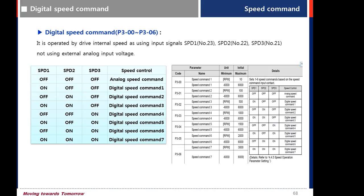To use digital speed command, refer to related parameters P300 to P306. After you set the speed in the parameters, you can operate the speed by the combination of speed 1, 2, and 3.